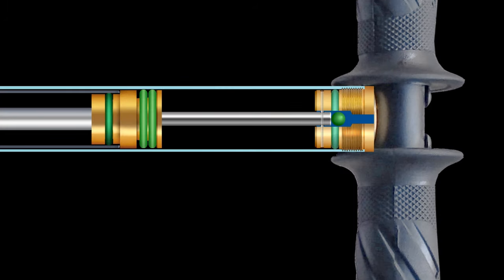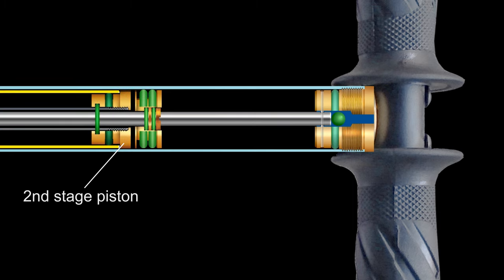Air goes into the third tube through the second stage piston. Third piston rod also moves through it.